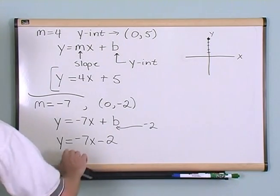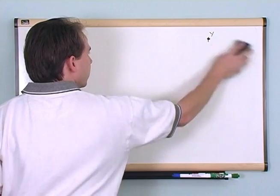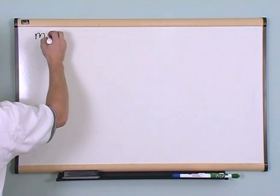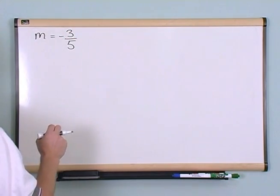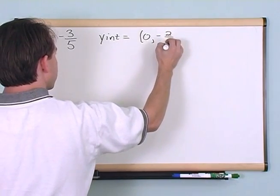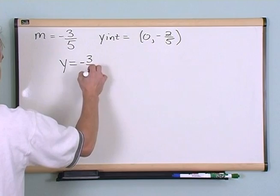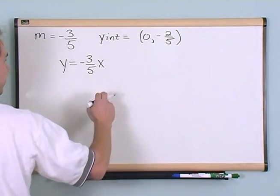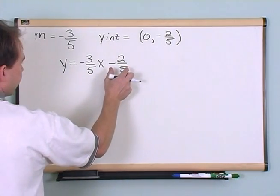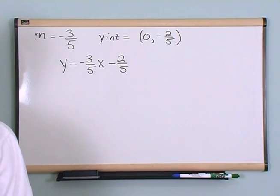Once you understand the general form mx + b — where m is the slope and b is the y-intercept — it's very easy to write the equation of a line. For example, if the slope is negative three-fifths and the y-intercept is (0, -2/5), you just plug and chug: y = -3/5 x - 2/5. You put a point at the y-intercept and use the slope to count rise over run to get your next point, then draw your line.